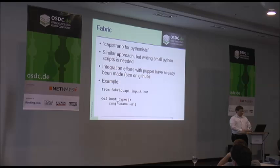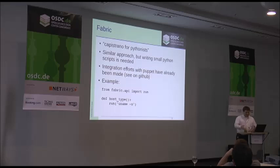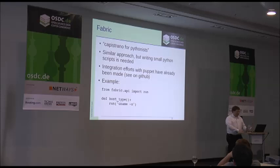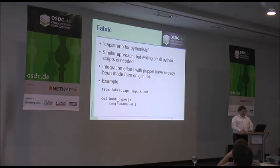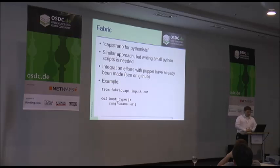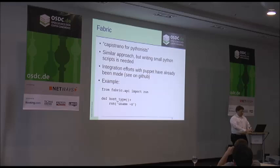You can also find several integration efforts that took place with Puppet where, in the Fabric libraries, connections to Puppet runs are made. If you want to incorporate it in your Python scripts, you just have to import the Fabric API as laid down on this slide, and then do the manual run similarly to the Capistrano approach.